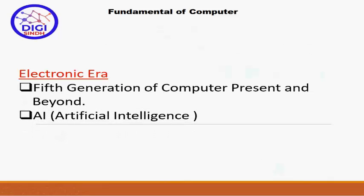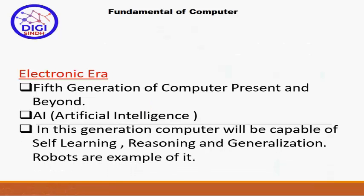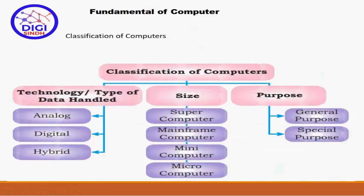Fifth generation of the computers کے لیے کوئی specific time period نہیں دیا گیا، صرف 'present and beyond' کہا گیا ہے۔ یہ ساری generation AI یعنی artificial intelligence کی basis پر ہے۔ اس generation میں computers self-learning، reasoning اور generalization کے قابل ہوں گے۔ اس کی main example robots ہیں جن میں artificial intelligence کی technology استعمال ہوتی ہے۔